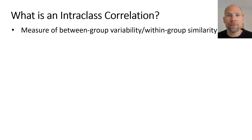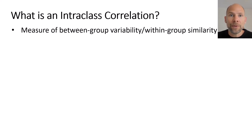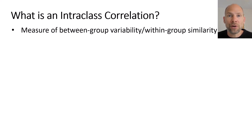Where is something like that relevant? It's relevant when you have a multilevel sampling design — for example, when you have students nested within school classes. Students within the same school class may be more similar to one another than to students from other school classes. We can use the intra-class correlation coefficient as a measure of within-school-class similarity, or alternatively as a measure of between-group variability.